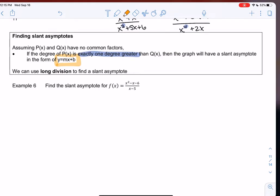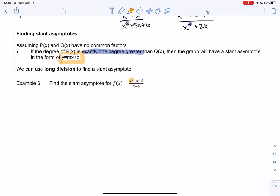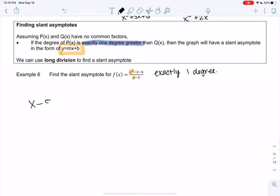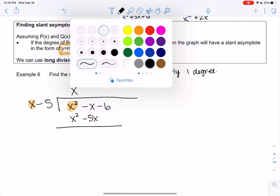This next example has a slant asymptote because it's exactly one degree, x to x squared. We'll do long division. x squared divided by x gives me x. We multiply x squared minus 5x and then subtract.